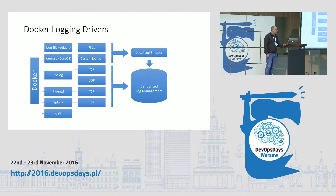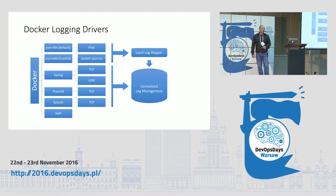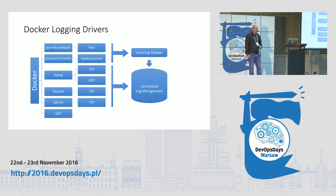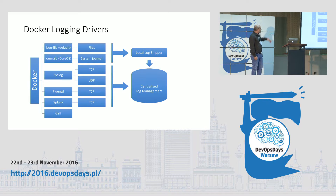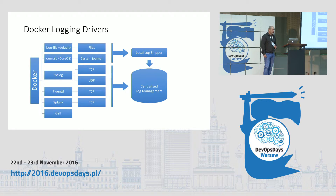For container logs, there's been a nice development of logging drivers. If you install Docker today, you get the default logging driver which is JSON. On CoreOS you might get JournalD as the default logging driver. You have other options like syslog, Fluentd, and Splunk, and they can work with TCP or UDP and ship logs to a remote destination. If you store logs in files, you have the additional task of taking logs from local storage and shipping them to a remote destination.